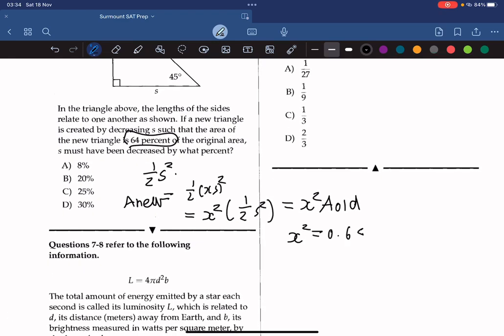So X squared is equal to 0.64 because the area of the new triangle is 64% of the original area. And now if you solve this for X, we'll get 0.8. So the answer must be 1 subtract by 0.8. So S must have been decreased by 0.2, which is 20%.